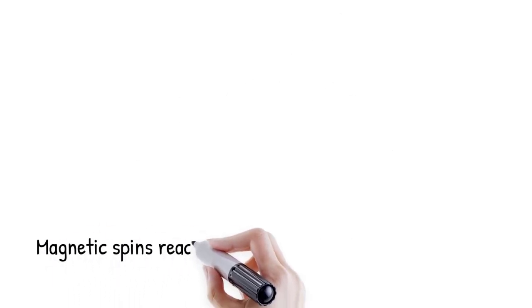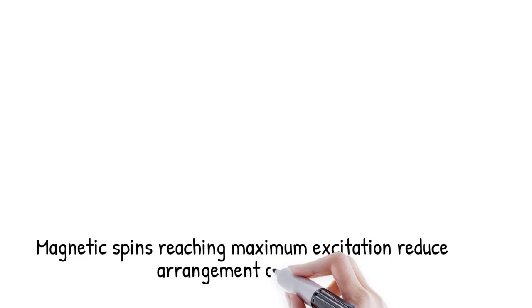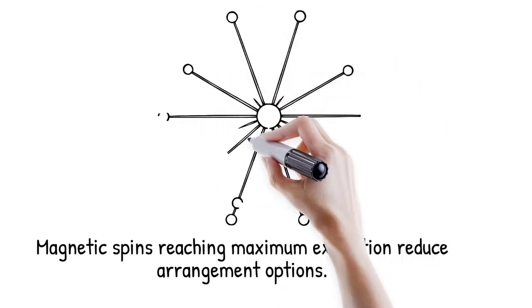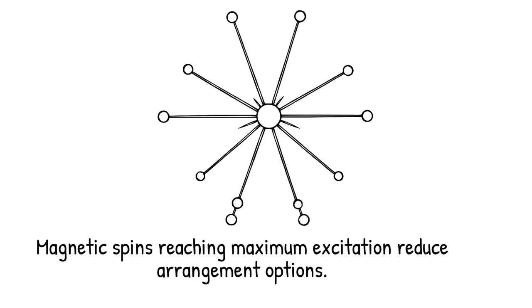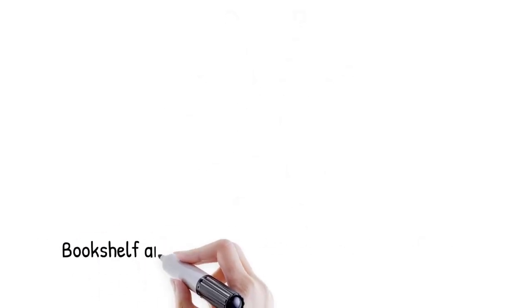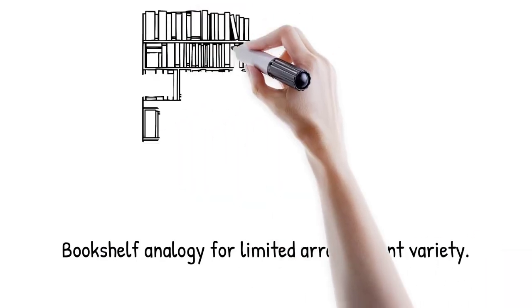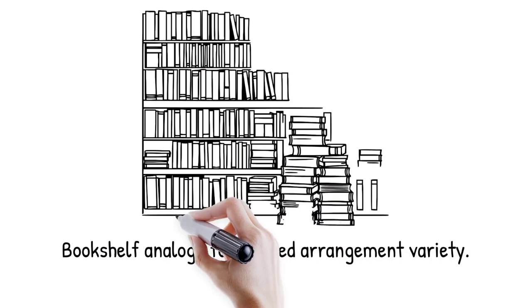Magnetic spins in a fixed number of sites can fill all available excited state slots, after which any further excitation forces them into identical states, reducing overall arrangement choices, like a bookshelf that can only hold 10 books. Once full, adding extra books means stacking them in a single pile, losing the variety of arrangement you had before.